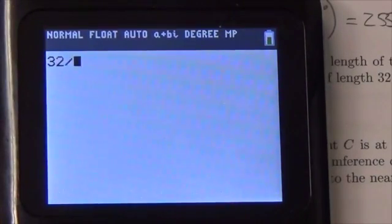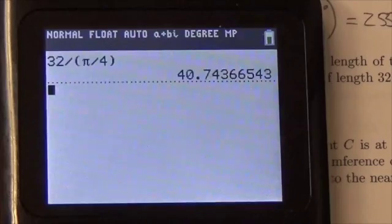So this will be 32 divided by, and in brackets, I want to put brackets around this so that the calculator knows the order of operations here, pi divided by 4. I'm going to get 40.7.